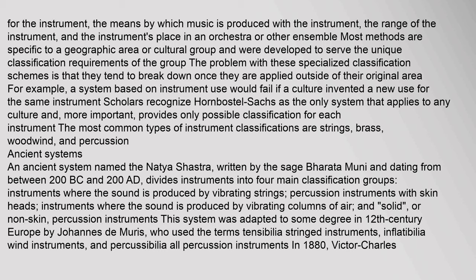The most common types of instrument classifications are strings, brass, woodwind, and percussion. An ancient system named the Natyashastra, written by the sage Bharata Muni and dating from between 200 BC and 200 AD, divides instruments into four main classification groups: instruments where the sound is produced by vibrating strings, percussion instruments with skin heads, instruments where the sound is produced by vibrating columns of air, and solid, or non-skin, percussion instruments. This system was adapted in 12th-century Europe by Johannes de Muris, who used the terms tensibilia for stringed instruments, inflatibilia for wind instruments, and percussibilia for all percussion instruments.